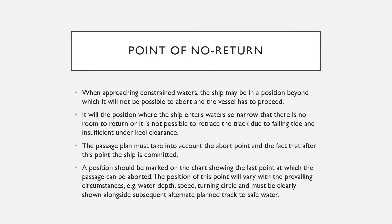The additional position I mentioned was the contingency position. A position should be marked on the chart showing the last point at which the passage can be aborted — that becomes the abort point. However, when you abort the passage, you also need to understand that the position of this point will vary with circumstances such as water depth, speed, and turning circle, and must be clearly shown alongside the subsequent alternate plan track. This alternate plan track — your Plan B — is what is called your contingency plan.